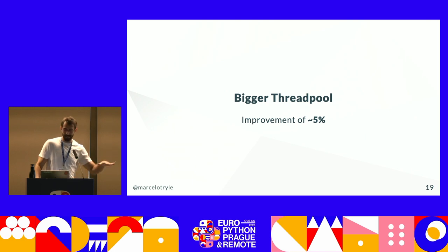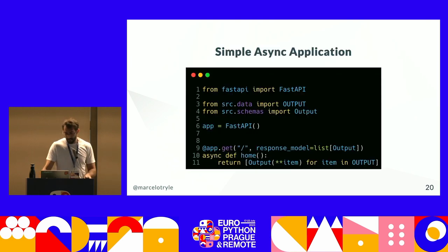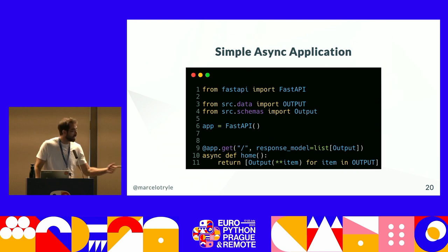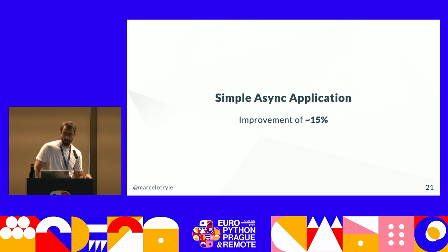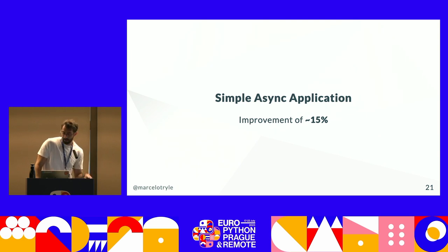The other option is adding the async keyword on the endpoint — the same example as the first but just adding async on line 10. That means you're not using the executor at all, just async tasks. Just because of that, you remove the threading overhead and get about a 50% improvement.